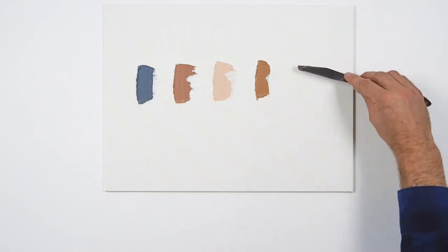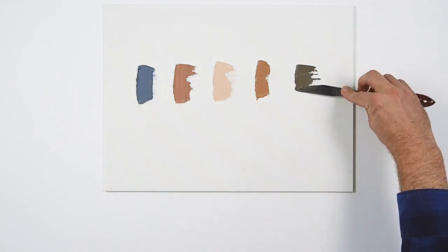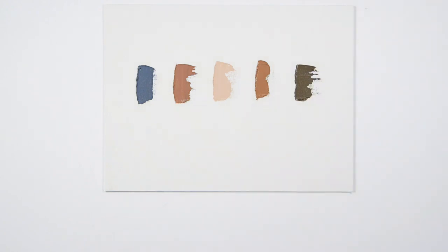A more modern way of creating sfumato is to work with opaque color and do the mixing on a palette. Here are some mixtures derived from a restricted palette for flesh, using yellow ocher pale, venetian red, raw umber, ultramarine and titanium white.